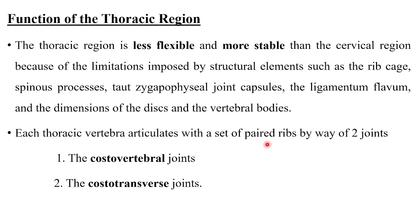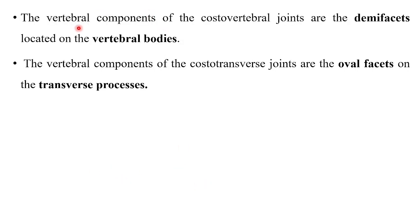Each thoracic vertebrae articulates with a set of paired ribs by way of two joints: the costovertebral joints and the costotransverse joints. The vertebral components of the costovertebral joints are the demi facets located on the vertebral bodies. The vertebral components of the costotransverse joints are the oval facets on the transverse process — the costotransverse facets.